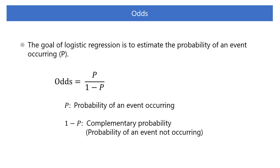The goal of logistic regression is to estimate the probability of an event occurring. We denote this probability as p. The complementary probability is 1 minus p — that is, the probability of an event not occurring is 1 minus p.